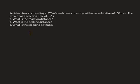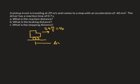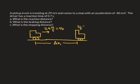So let's go ahead and draw a picture of the situation. We've got a truck traveling at 29 meters per second — this will be our initial velocity. The person inside the truck is going to have a reaction time of 0.7 seconds, which means it's going to take 0.7 seconds for the person to react and actually apply the brakes. In that 0.7 seconds, the car is going to travel some distance. We'll call that delta x1, and we're going to define that as the reaction distance. The velocity after 0.7 seconds is still going to be 29 meters per second, because the person hasn't applied the brakes yet.